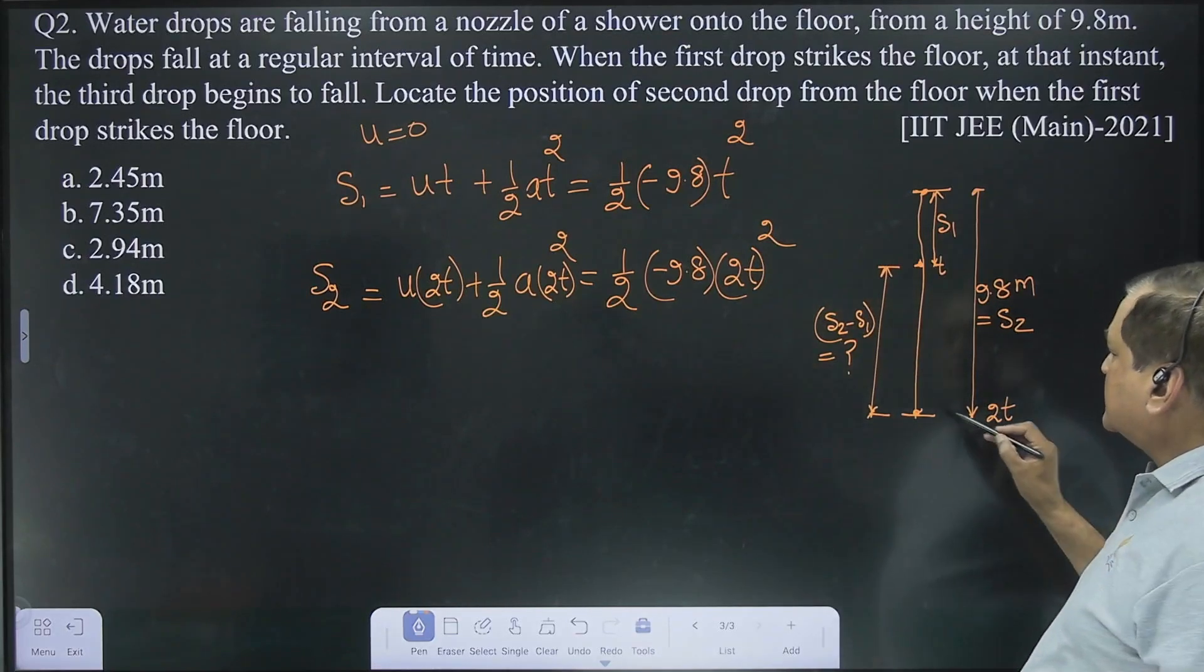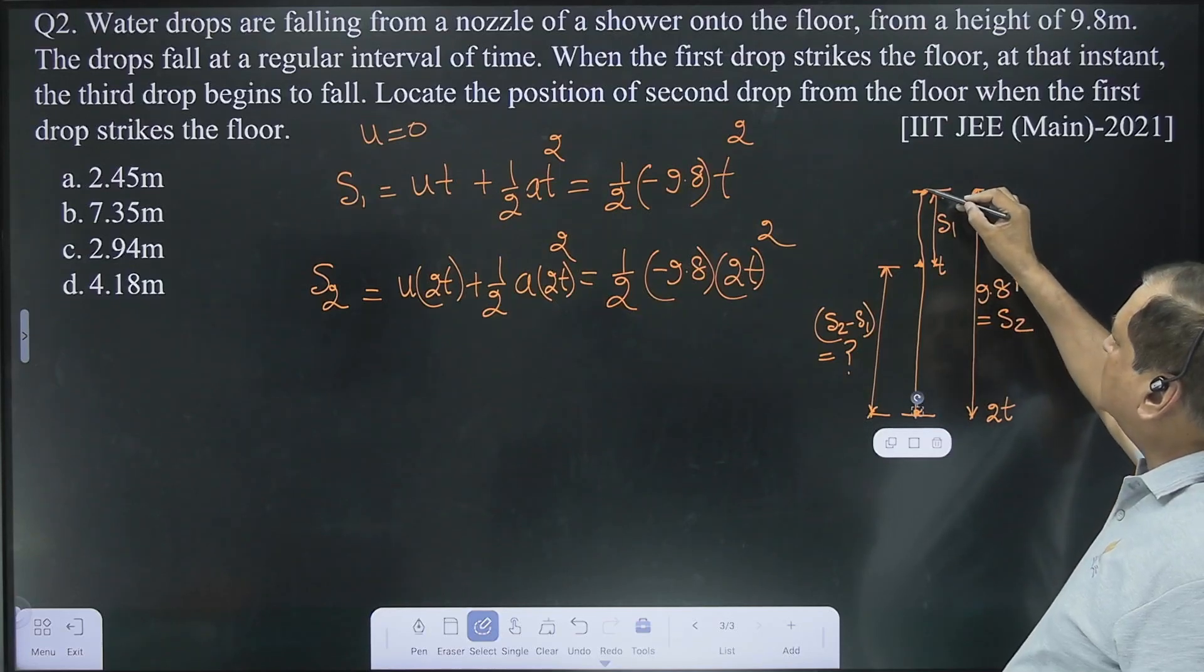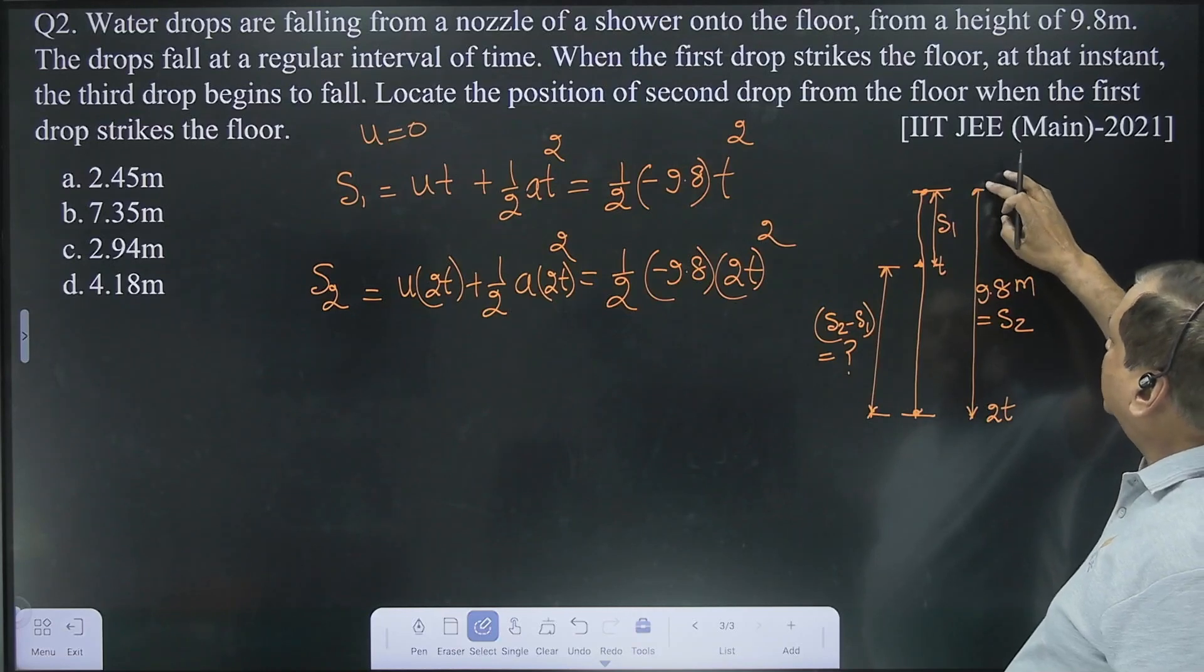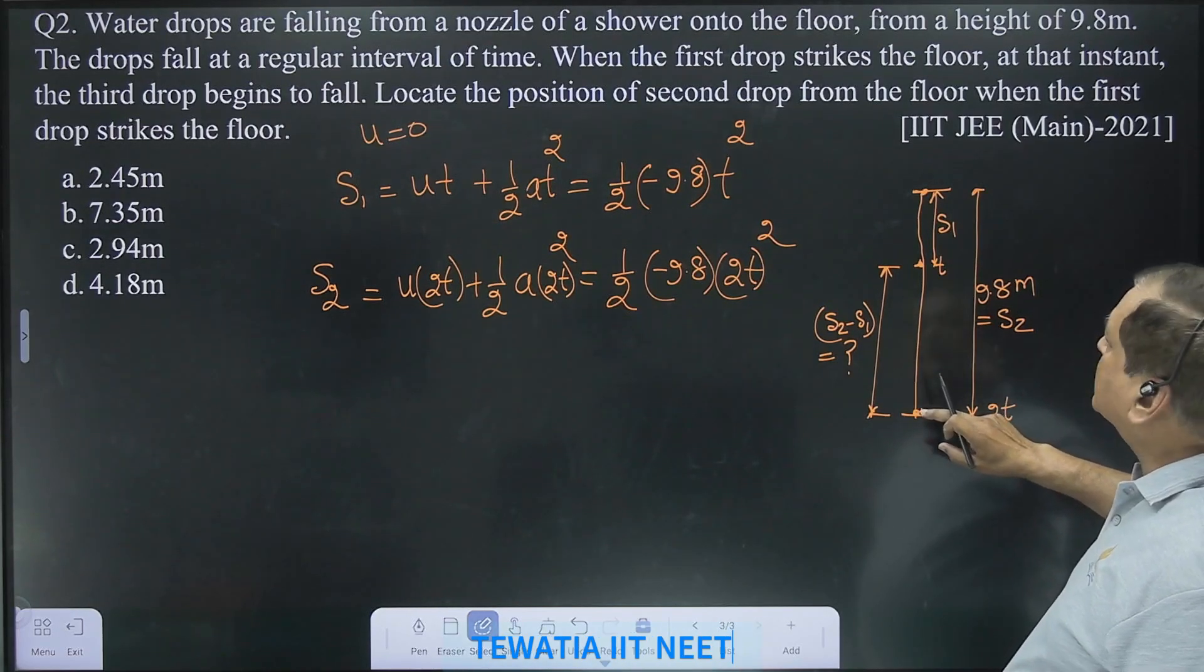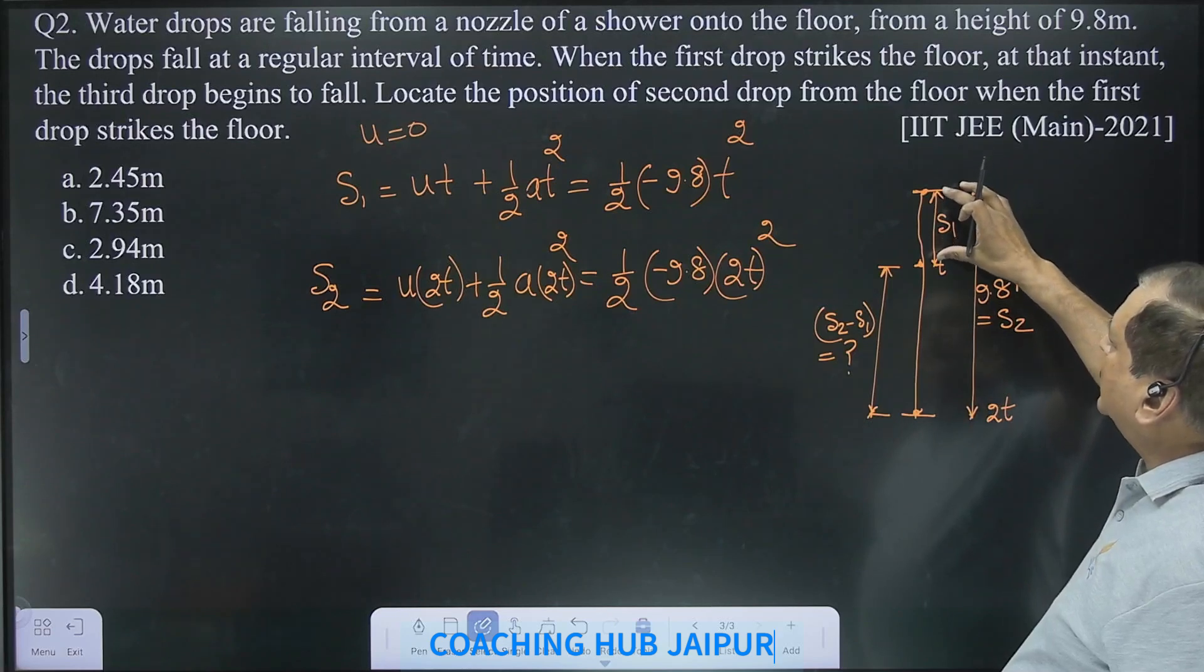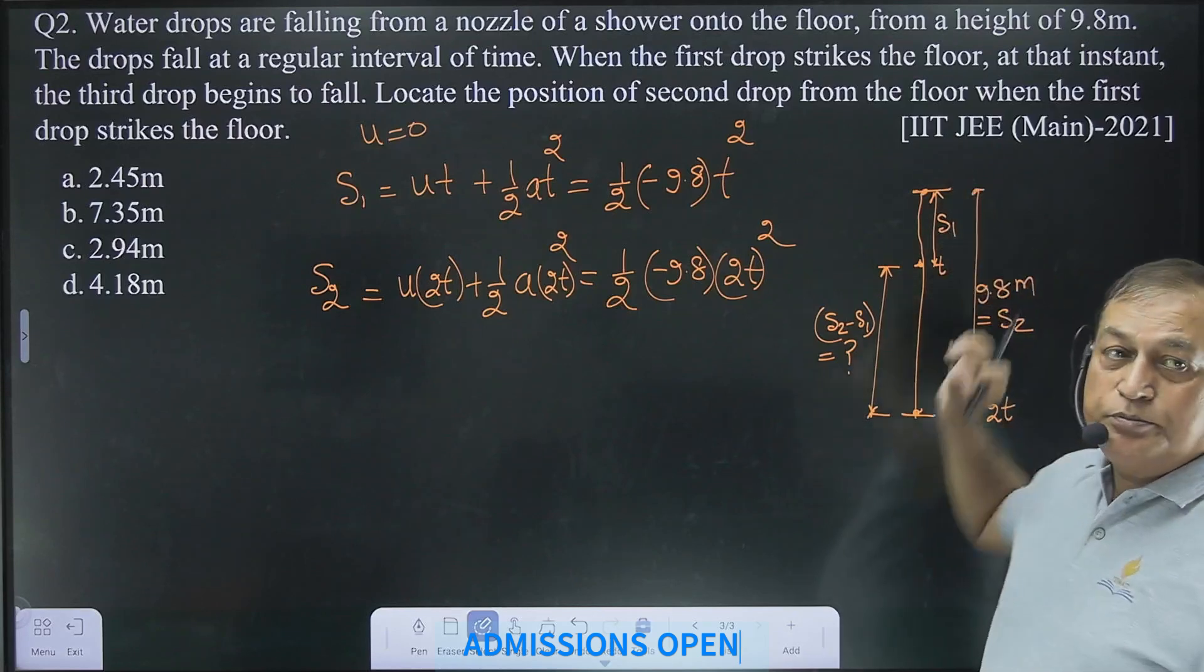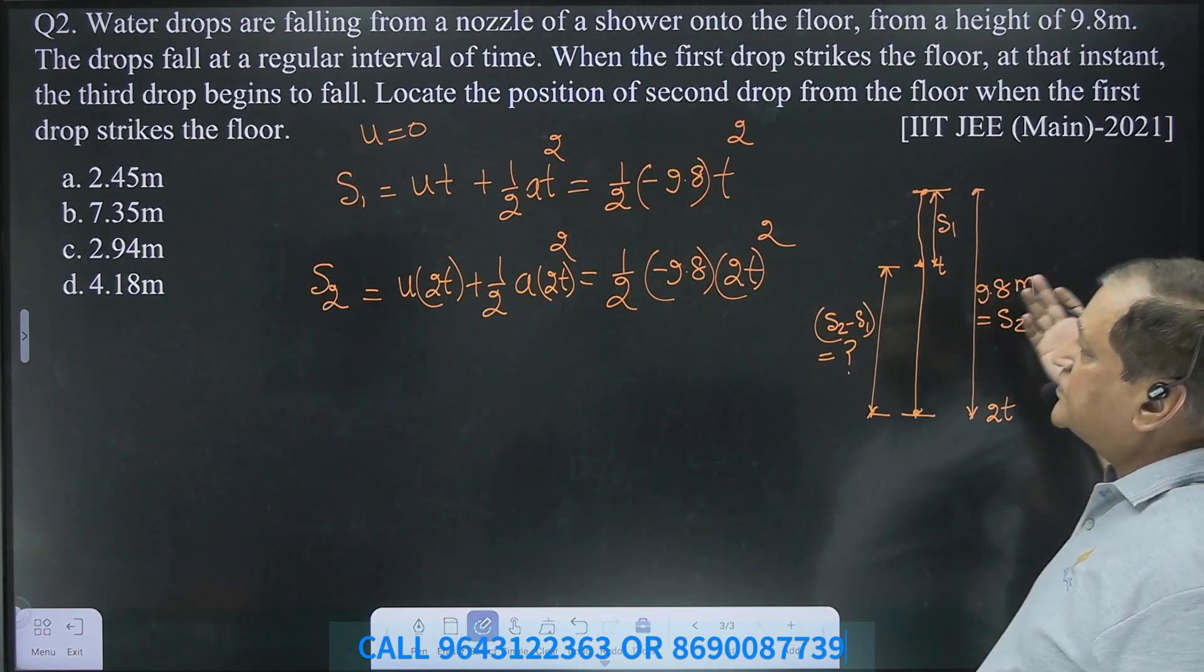This is the first drop, this is the third drop, this is the second drop. So when this first drop strikes the ground, third drop is about to fall, this distance is 9.8 meter and we have to locate the position of the second drop from the ground, not from the top, that is to be remembered.